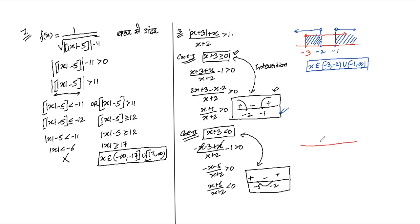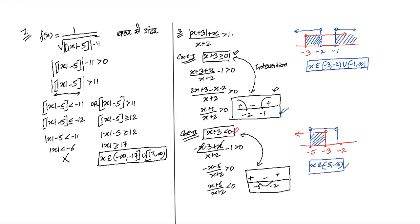Plotting Case 2: the condition x < -3 and the wavy curve result (-5, -2). The intersection gives x ∈ (-5, -3). Now combining Case 1 and Case 2 by taking union: (-5, -3) ∪ [-3, -2) ∪ (-1, ∞) = (-5, -2) ∪ (-1, ∞). That's our final answer.